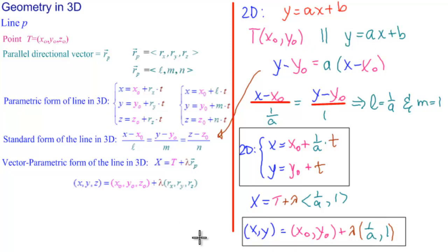So here we have how to write, instead of writing in slope intercept, which is our standard form in 2D, here's how to write the parametric form of a line in 2D, and the vector parametric form of a line in 2D.